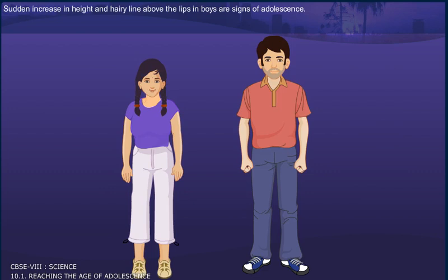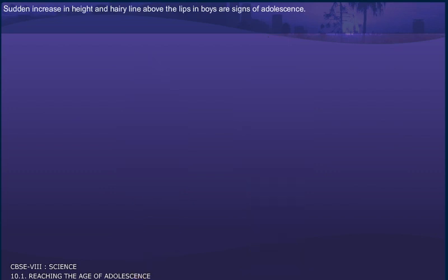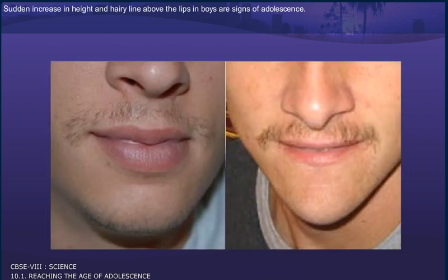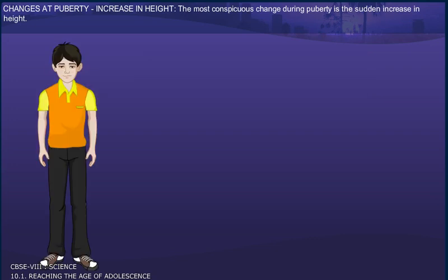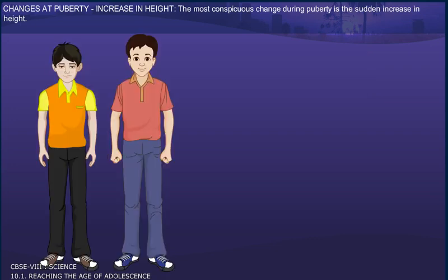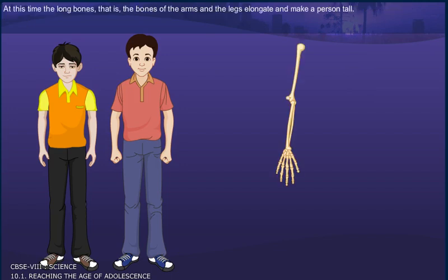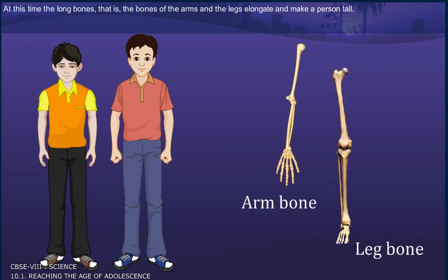Sudden increase in height and a hairy line above the lips in boys are signs of adolescence. Changes at puberty — Increase in height: The most conspicuous change during puberty is the sudden increase in height. At this time, the long bones, that is, the bones of the arms and the legs, elongate and make a person tall.